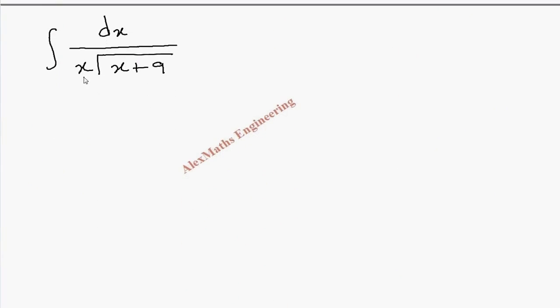We have in the denominator 2 terms, both are linear. The term inside the square root is also linear and the outside is also linear.